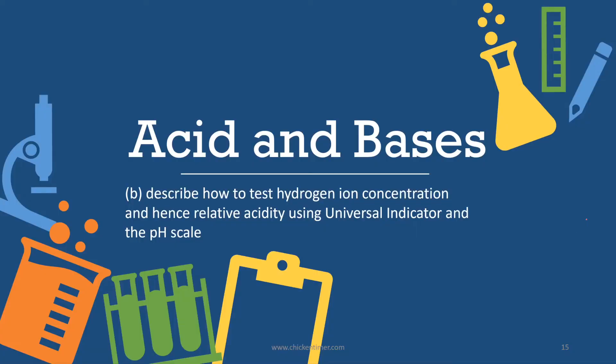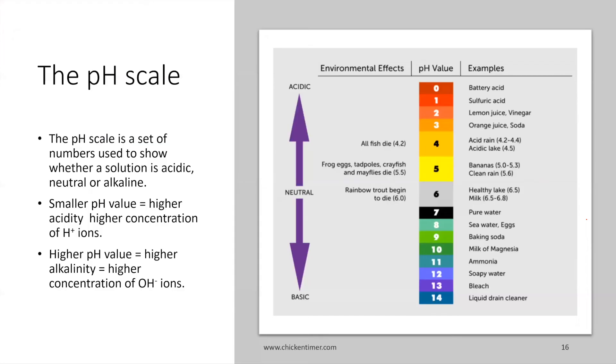You know acids, you know bases, you know alkalis. Then we have to talk about hydrogen ion concentration and hydroxide ion concentration, and then your universal indicator and some other indicators in the pH scale. The pH scale is used to measure whether a solution is acidic, neutral, or alkaline.